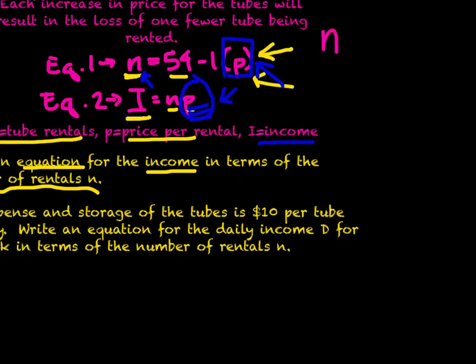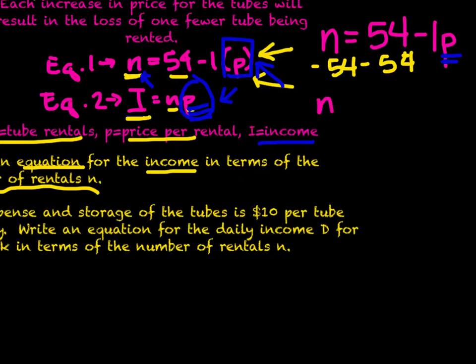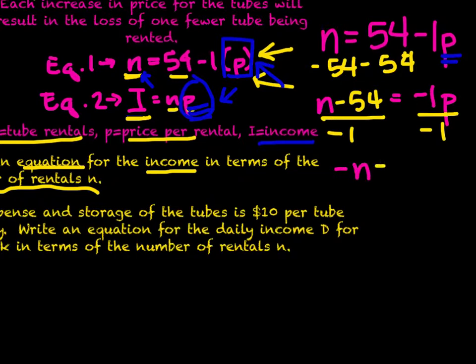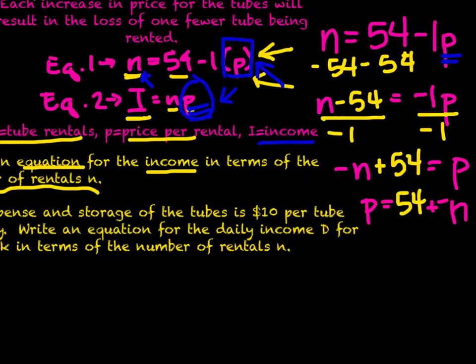We have the number of tubes equals 54 minus 1 times p. We want to get p all by itself, so my first step is to subtract 54. Now I have n minus 54 equals negative 1p. That negative 1 is multiplying that p, so I am going to divide by negative 1. n divided by negative 1 will get me negative n, and negative 54 divided by negative 1 will get me positive 54, and that equals p. Another way I could write this is p equals 54 minus n.